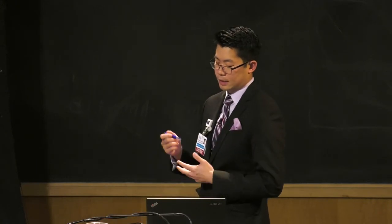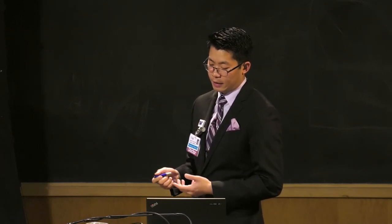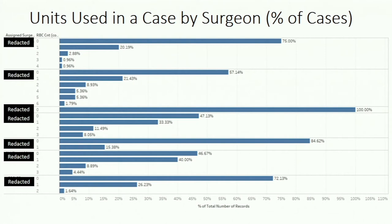How can we enact patient blood management through this blood utilization review data? One thing that we could do is we could look at service and encounter data, and see if there's any difference in the number of units used in a case by each different surgeon or anesthesiologist, and use this as kind of a report card. This shows the number of units used in a case by each surgeon and the percentage of times that they used that many units. Of course, the names here are redacted to protect the names of the innocent.